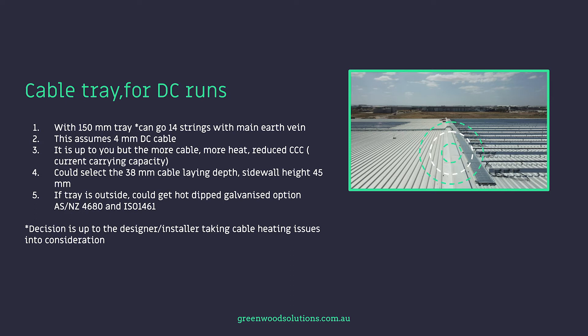How many DC cables could you put into a cable tray? This is really up to the designer. I'd be looking at maybe putting 14 strings max into 150mm — that's 14 strings positive and negative — plus the main earth vein that goes down the cable tray, which is the earth from the rail that continues down to the main earth point. For sidewall height, I'd be looking at the 45mm sidewall height, which allows you 38mm of usable cable space.